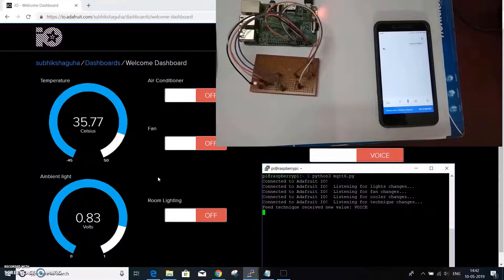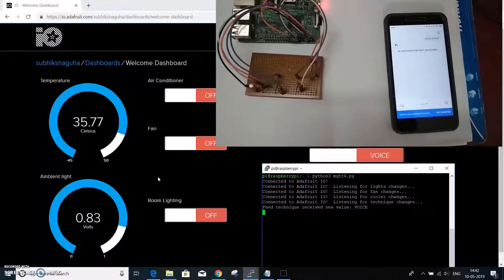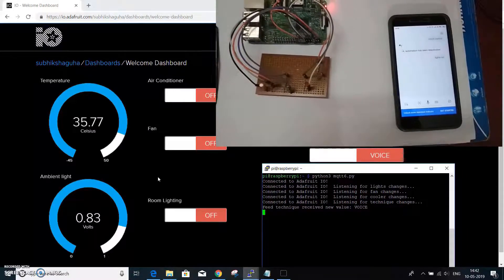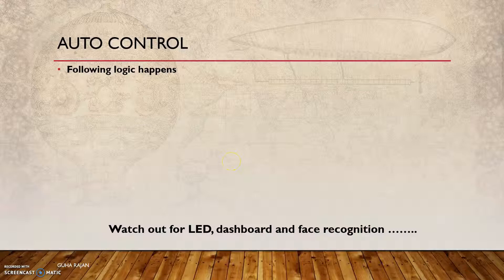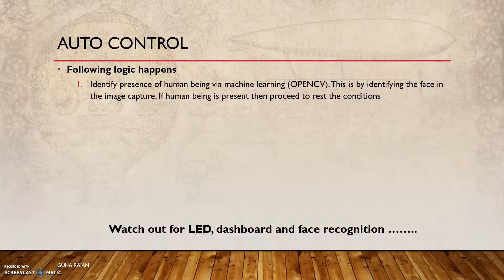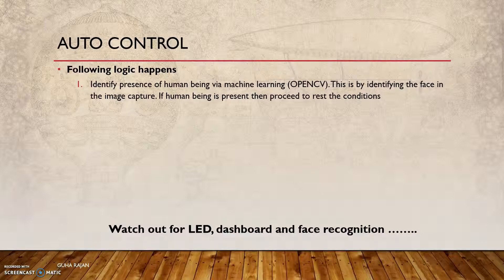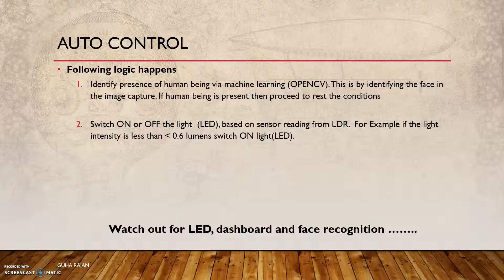Automation has been deactivated. Lights on. Okay, switching on the lights. You then perform automatic control — identifying the presence of a human being via machine learning, that is OpenCV, by identifying the face in the image captured. If a human being is present in the building or room, then proceed with the rest of the conditions. You capture data from sensors like LDR, then switch the light on and off — in this case it is LED — based on the lumen condition.